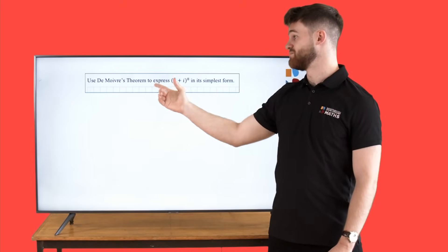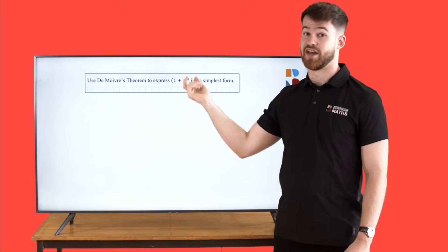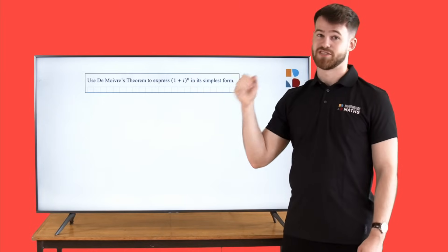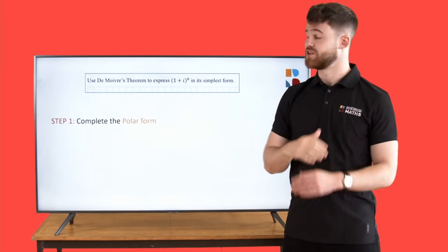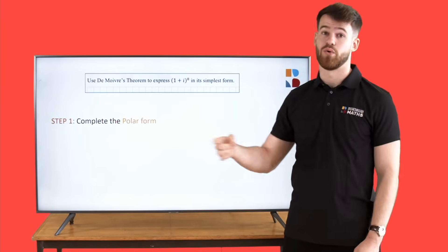Use De Moivre's theorem to express 1 plus i to the power of 8 in its simplest form. Step number one for De Moivre's theorem is always going to be: put your complex number in polar form. If you're confused about this, you can check out our video on polar form.